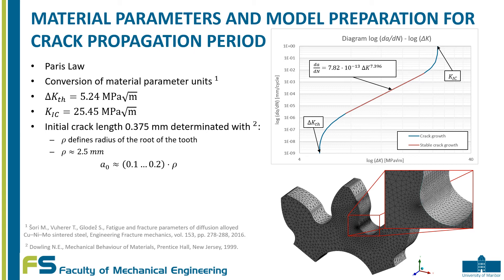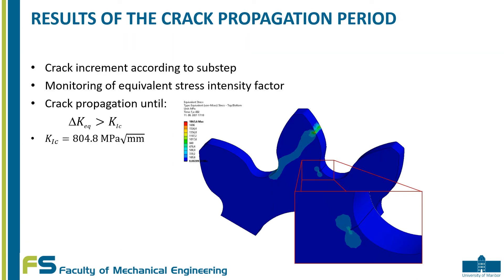The computational model for crack growth used the Paris law with parameters found in the previous article, though much attention had to be paid to converting units. A crack was created to analyze fracture behavior using the arbitrary crack and smart crack growth tools. The initial crack was 0.375 mm in length, determined by the equation below, where rho defines the radius of the root of the tooth. The finite elements around the crack tip were 0.05 mm in size and were matched automatically as shown in the figure. For each sub-step the program calculates a new crack position, making it possible to monitor the equivalent stress intensity factor range.